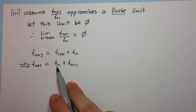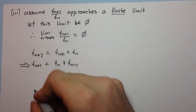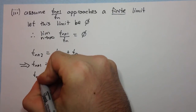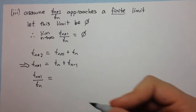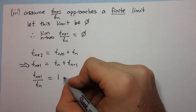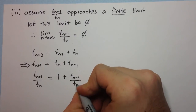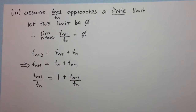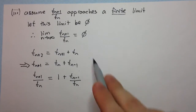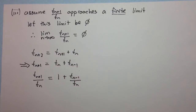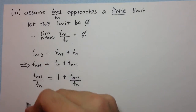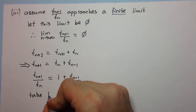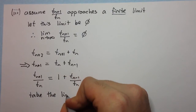The reason we do this is so that we can now divide through by t(n) on both sides. We get t(n+1)/t(n) = 1 + t(n-1)/t(n). Now we can take the limit as n approaches infinity of both sides, because this is what we're looking for — we're trying to find what phi is.